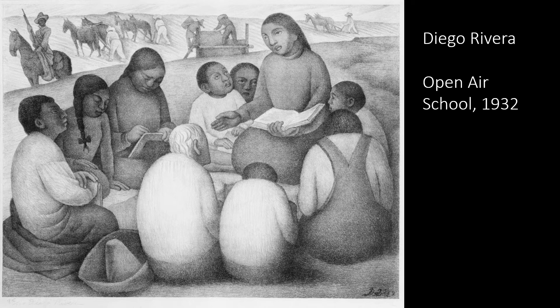As a warm-up, let's look at this simpler Diego Rivera print called Open Ear School, done in 1932. Implied lines clearly point to the teacher — she's obviously the focal point of this print.